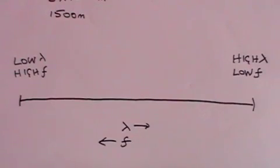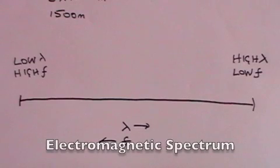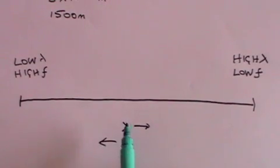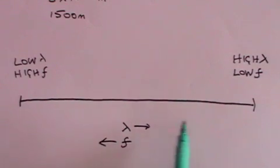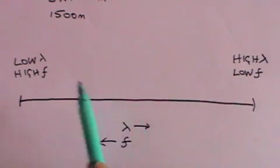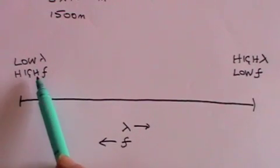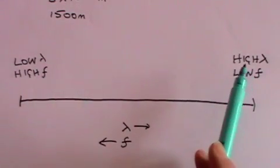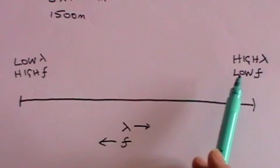And we can draw a spectrum, it's called the electromagnetic spectrum, showing different waves depending on their wavelength, which increases in this direction, or their frequency, which of course increases in this direction, because as the wavelength increases, the frequency decreases. So at this end you've got low wavelength but high frequency, and at this end you've got high wavelength but low frequency.